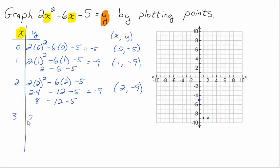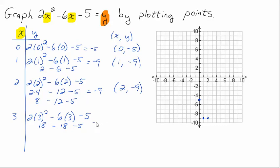Let's try three. Two times three squared minus six times three minus five. If I'm going a little fast, pause the video and get caught up. Three squared is nine, times two is eighteen. Take away eighteen, take away five. So that's zero, take away five — that's negative five again. So now I have the point three, negative five.